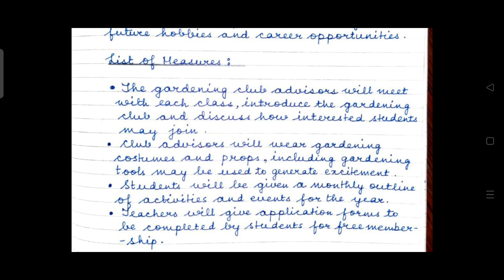The second step: 'Club advisors will wear gardening costumes and props, including gardening tools, which may be used to generate excitement.' The third step: 'Students will be given a monthly outline of activities and events for the year.' The fourth step: 'Teachers will give application forms to be completed by students for free membership.' These are the four specific steps to successfully establish this club.